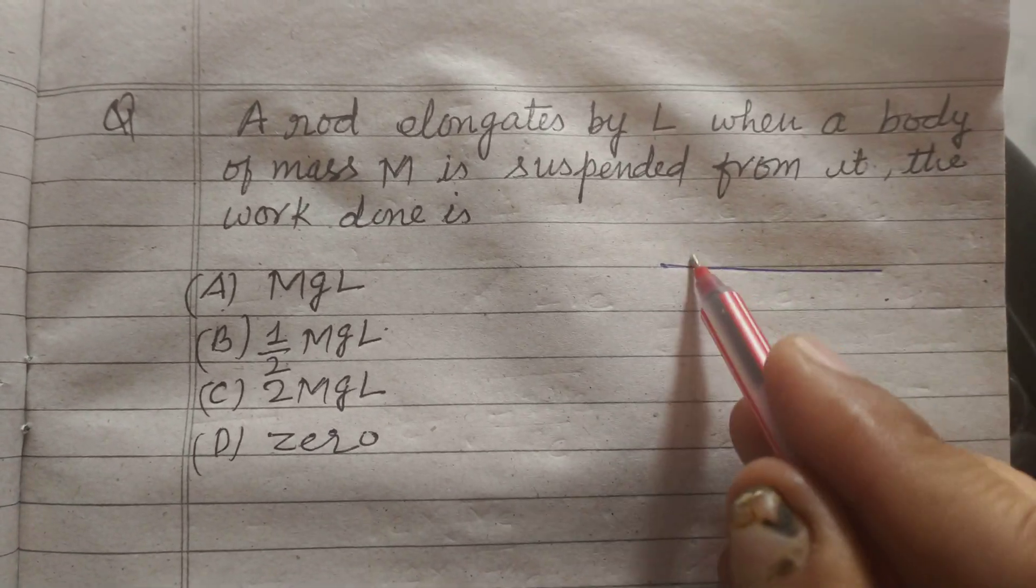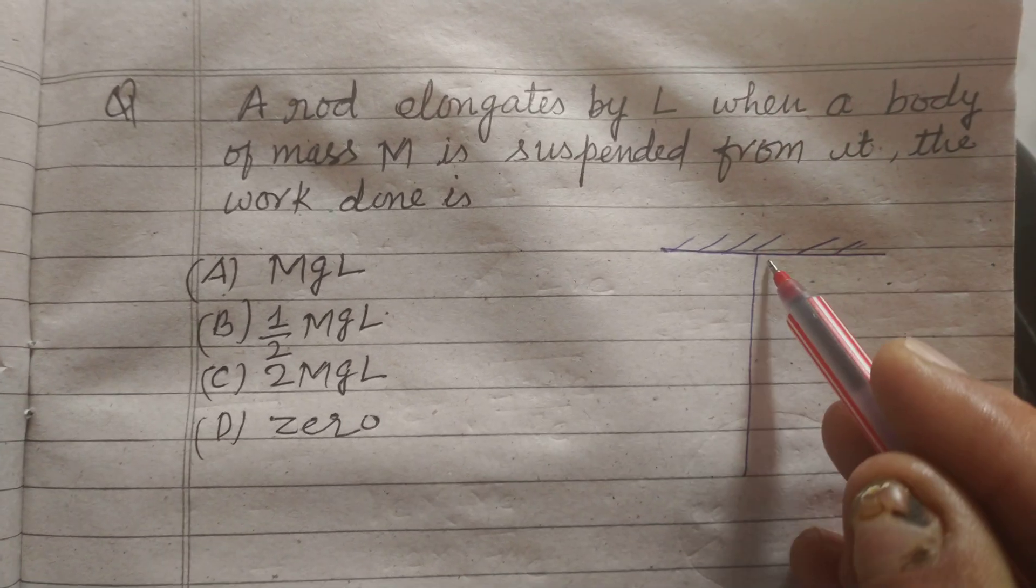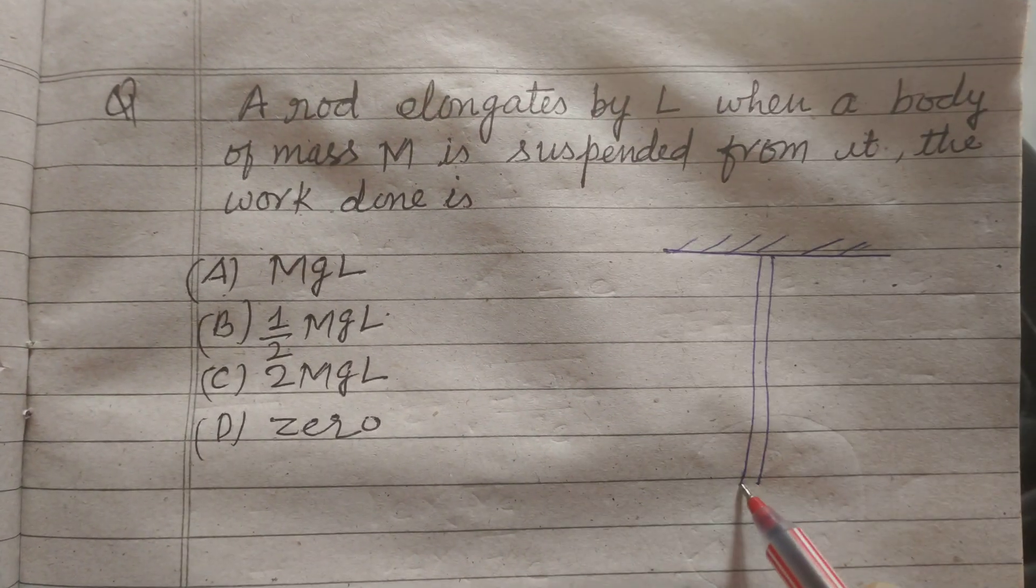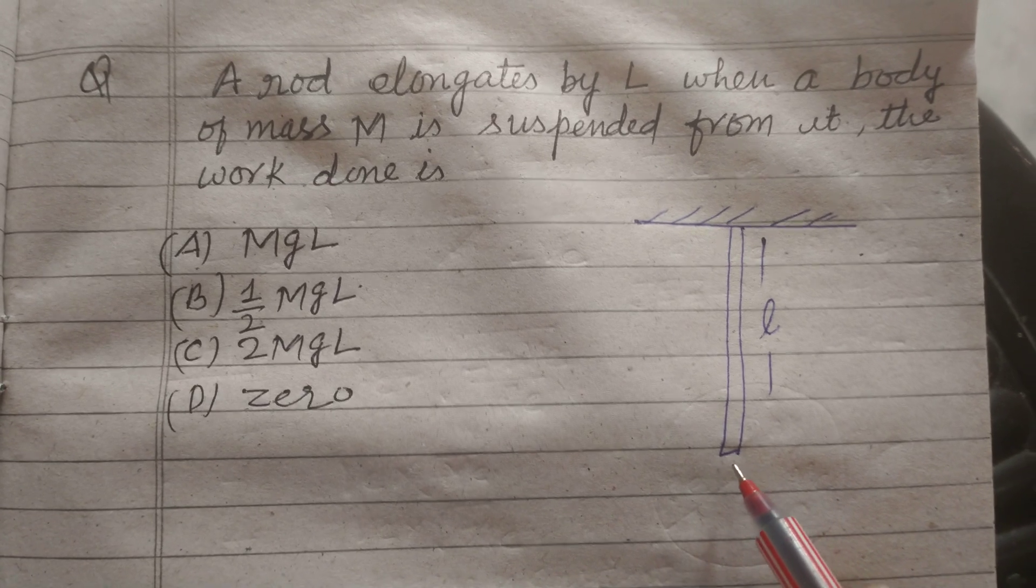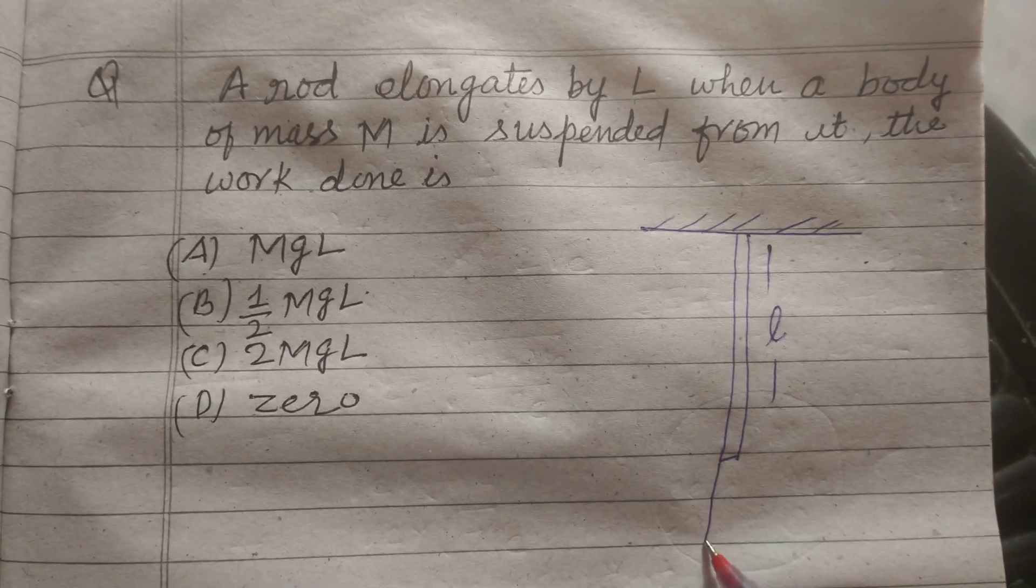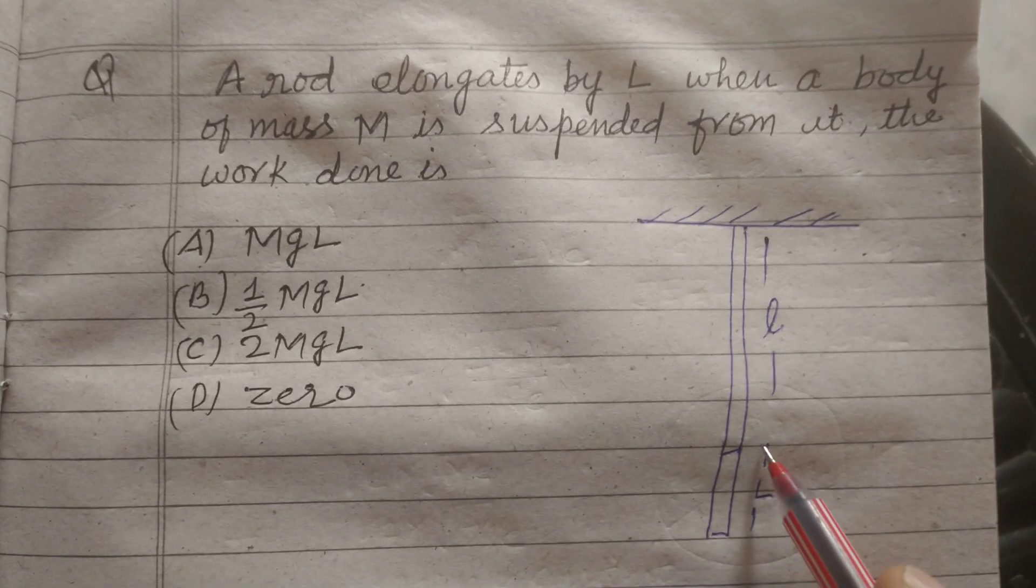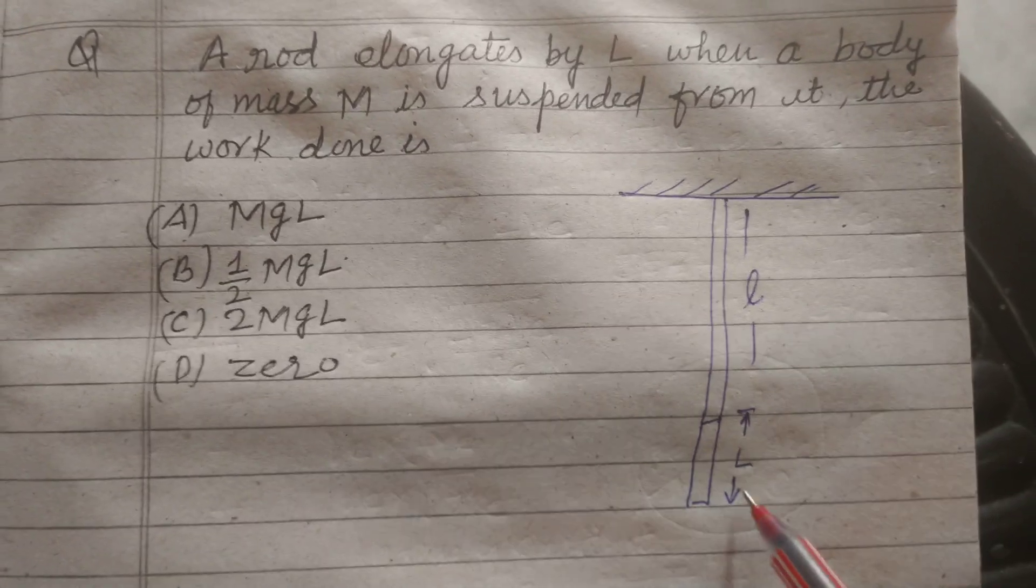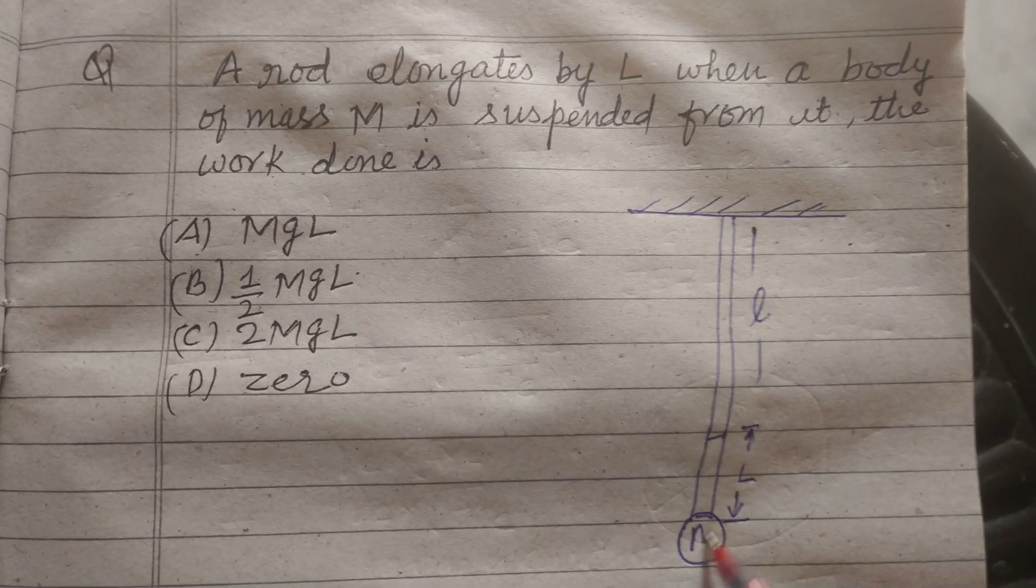So students, this is a rod. The initial length is l, and when a mass is suspended from it, it elongates by length L. This is the mass of capital M.